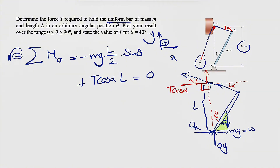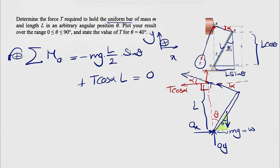Now we need to find the relationship between alpha and theta. Looking at the right triangle: the bar has length L, so the horizontal projection is L·cos(θ) and the vertical projection is L·sin(θ). The vertical side of our upper right triangle is also L·sin(θ). The key distance we need is L minus L·cos(θ), since the total horizontal distance is L. That's the trick of this question.